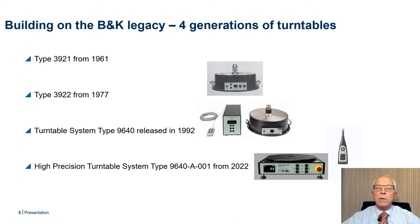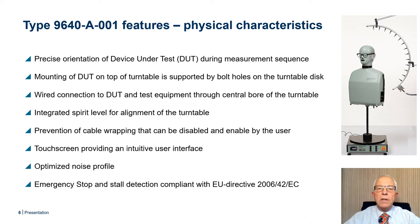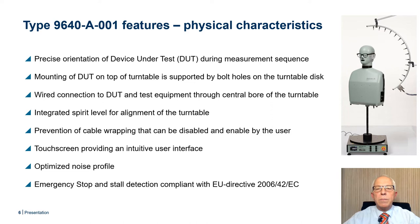This new high-precision turntable is shown side-by-side with the newest sound level meter, as the two instruments share user interface design concepts. The turntable allows precise positioning of the device under test during a measurement sequence. It is also possible to mount various devices on the turntable utilizing the bolt holes on the desk. Wires for connections to the device being tested or the test equipment can be led through the central bore of the turntable. For proper alignment, an integrated spirit level is provided. Prevention of cable wrapping is implemented and can be disabled and enabled by the user.